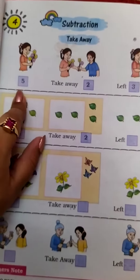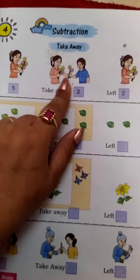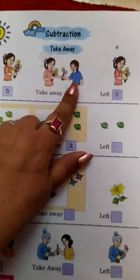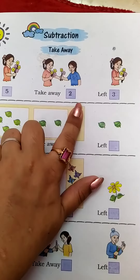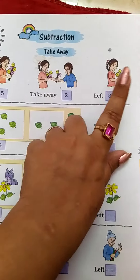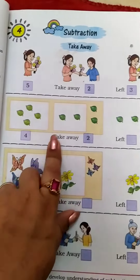She has 5 flowers. She gave 2 flowers, so 2 flowers were taken away from her. How many are left? 3 are left.